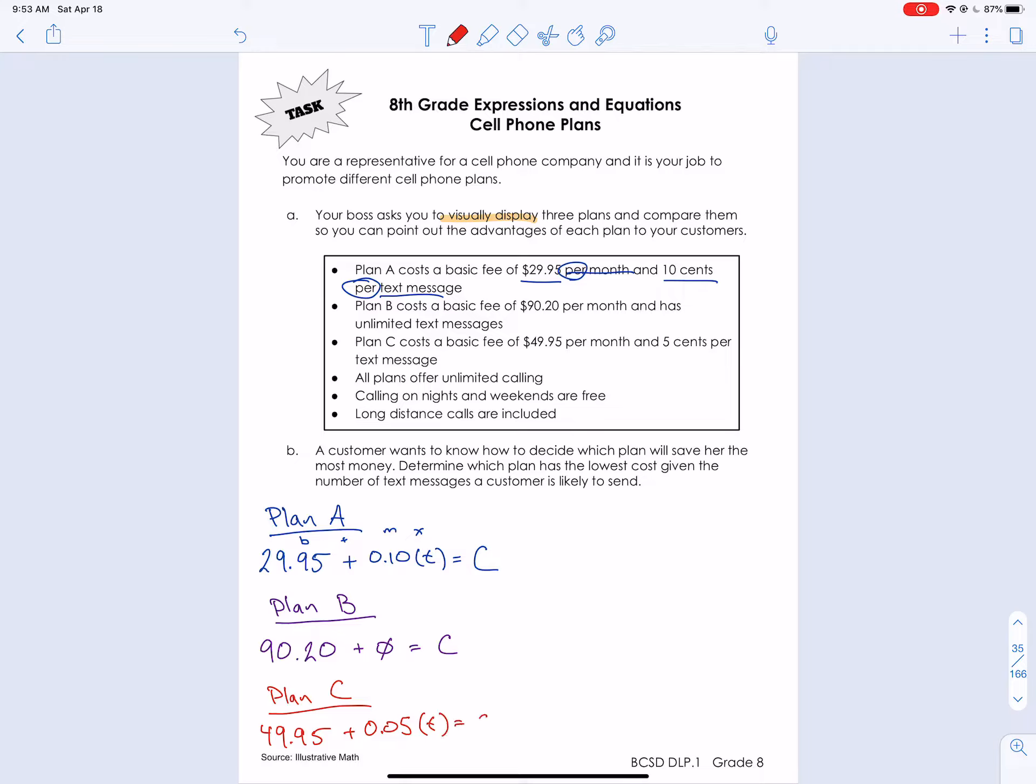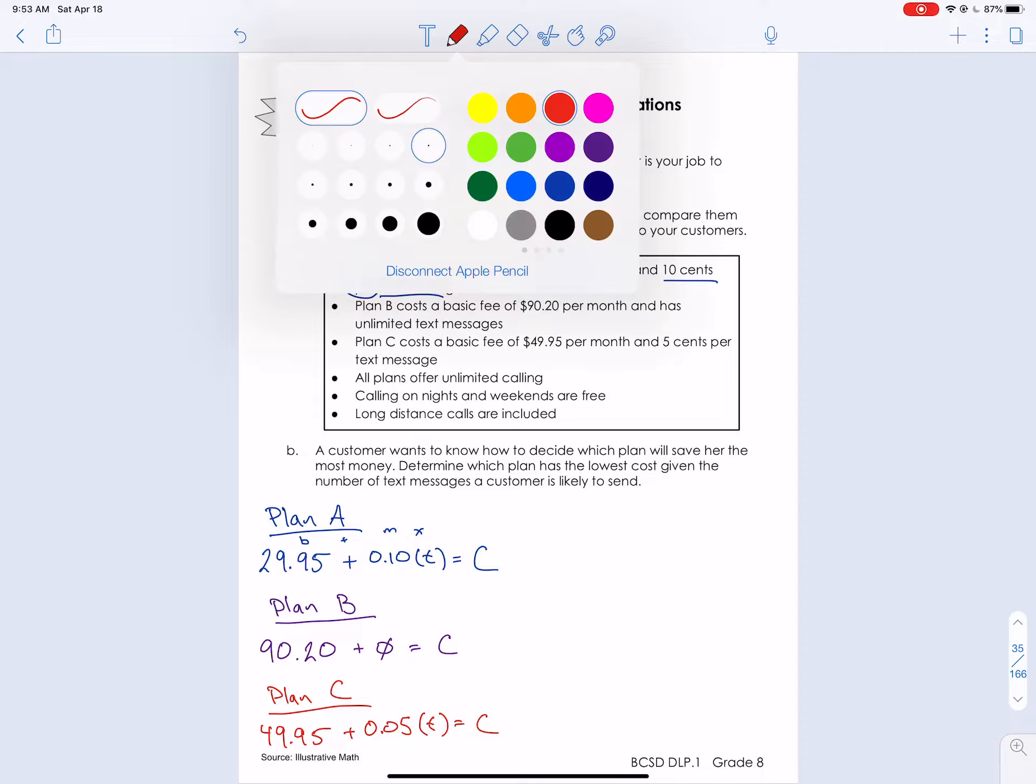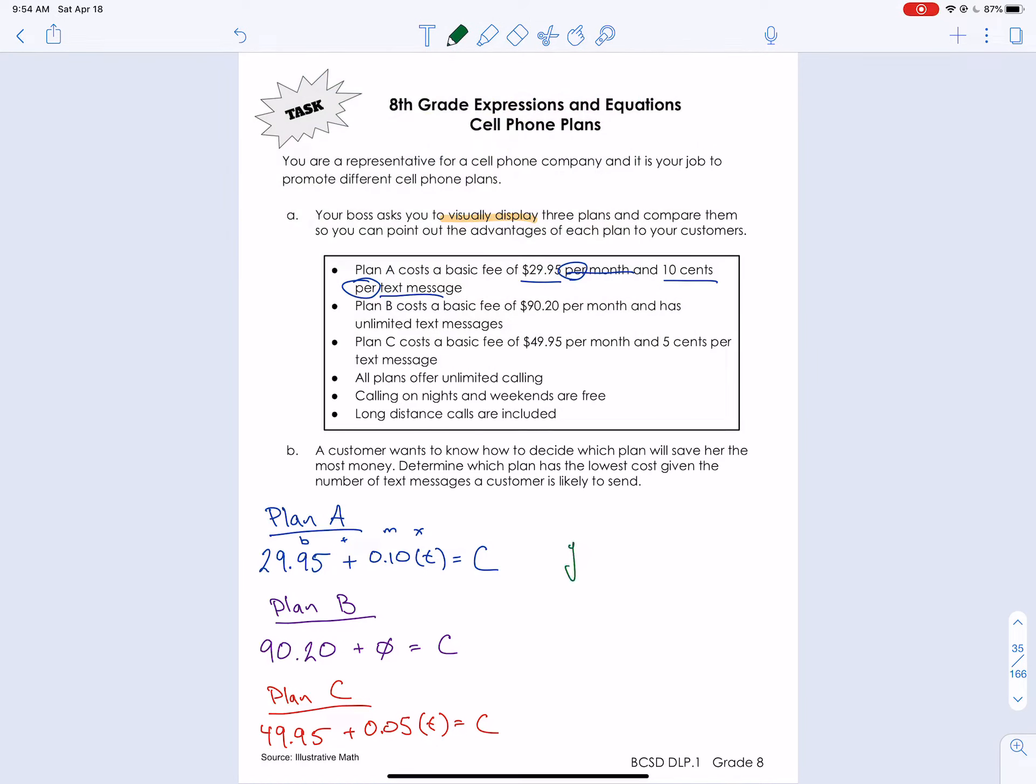And then the final one, plan C, we have a $49.95 cost per month plus $0.05 per text. So 0.05 times however many texts that we have. So C is just cost, cost per month. It really is just going to be Y on our graph. So I'm just going to rewrite these with Y and X just so it's a little bit easier to understand. So plan A, we have Y equals 0.10X plus $29.95. Plan B, we have Y equals $90.20, and that's it. And plan C, we have Y equals 0.05X plus $49.95.